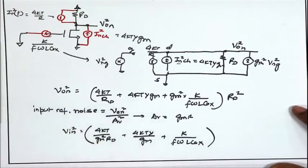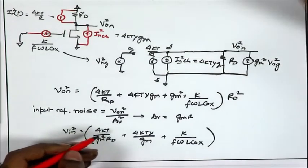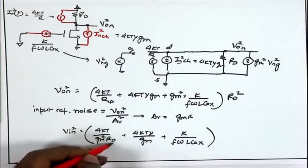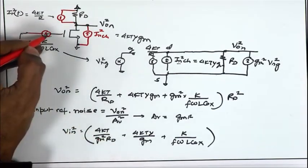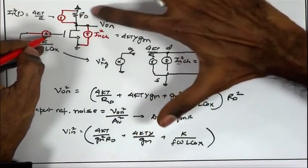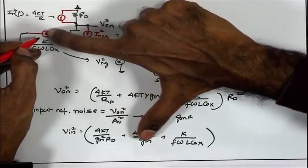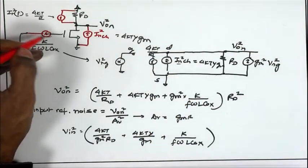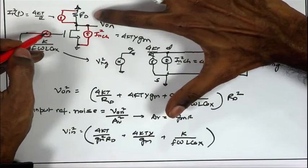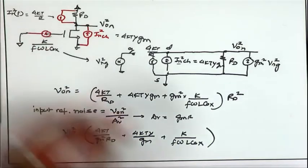We see some interesting results: the input-referred noise is inversely proportional to R_D. Although larger R_D produces more noise voltage, it also amplifies the input signal more, so the input-referred noise is actually lowered with larger R_D — the signal-to-noise ratio improves. Likewise there is strong dependence on gm: larger gm means smaller input-referred noise in the first two terms, achievable by increasing I_D or increasing W/L.